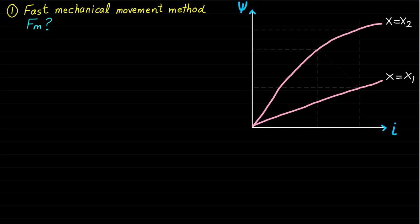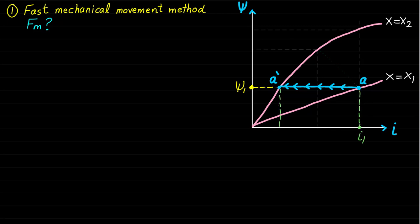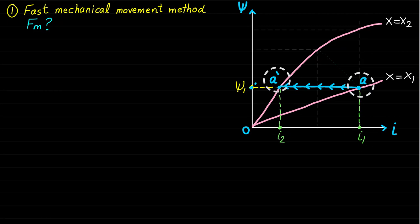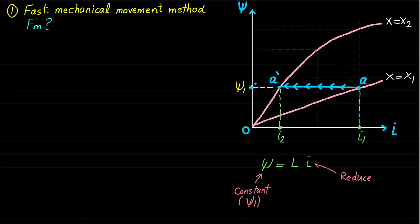The fast mechanical movement from A to A-dash happens under constant magnetic field linkage ψ₁. That means the mechanical movement happens very fast and reaches position X2 while the change of magnetic field linkage is very slow and can be considered constant. Note that the current is reduced from I1 to I2 during the movement from A to A-dash. This can be explained using the magnetic field linkage equation ψ = Li. Since ψ is constant, the current is reduced from I1 to I2 because the inductance increases during the movement.